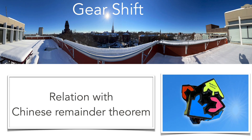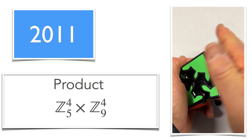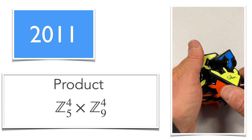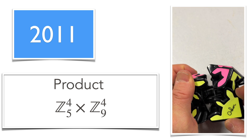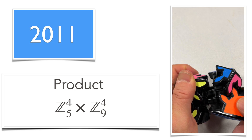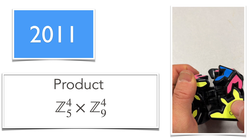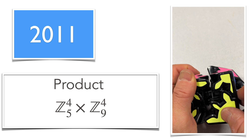Finally, the gear shift — one of my favorites also because it is abelian. It has a relation with the Chinese Remainder Theorem, and it's just a product of Z5^4 and Z9^4. It has relations with the Chinese Remainder Theorem because when you want to make one side right, you have to apply the theorem, and once you have this you can put it together and build the whole.